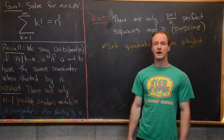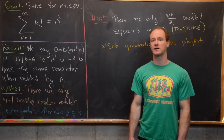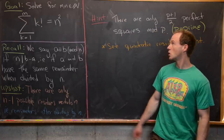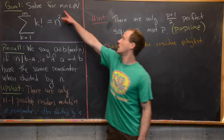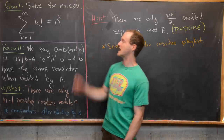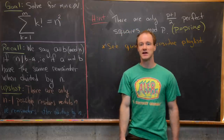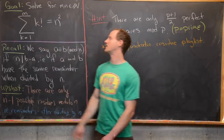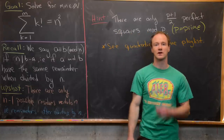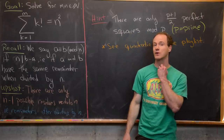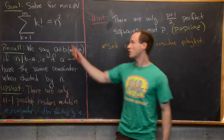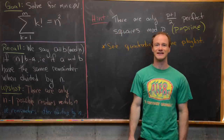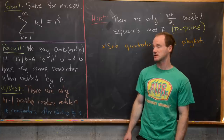Here we're going to look at a pretty quick but fun little number theory problem. Our goal is to solve for all natural numbers m and n such that the sum from k equals 1 to m of k factorial equals n squared. In other words, the sum of these factorials is a perfect square.